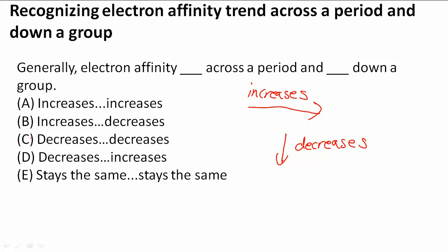So I know that decreases here will not work or stays the same does not work. So it's either A or B and the only one that has increases across a period and then decreases down a group is B.